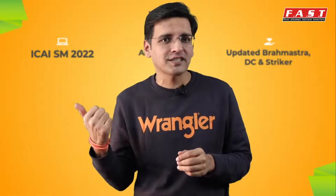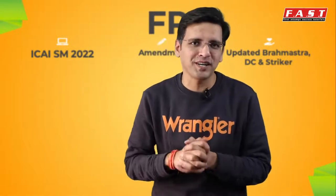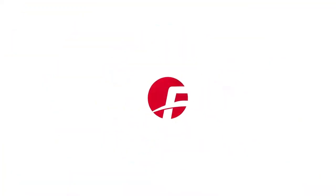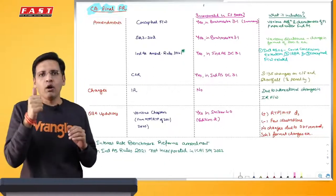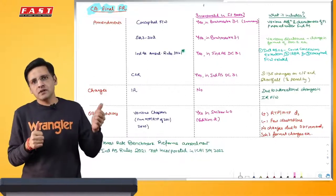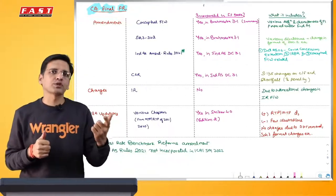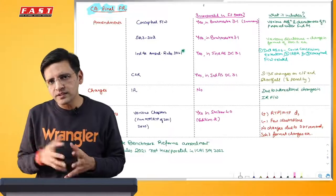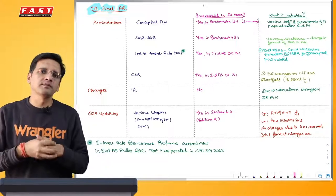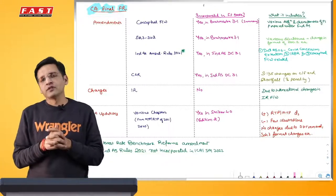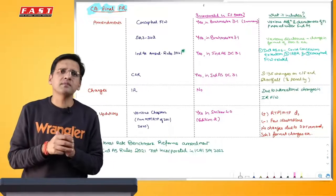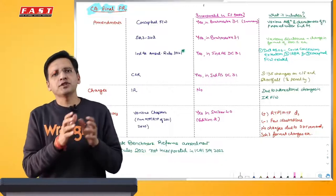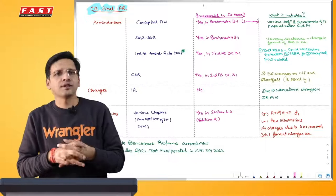I'll make a separate video for audit and intermediate advance accounts and audit - the subjects which I teach. Primarily, if we talk about these amendments, more or less you can see that these amendments are a consequence of amendments made in the law. In case of Financial Reporting, it is the Companies Act 2013 along with Ind AS Amendment Rules 2021, plus some new publications of the CA Institute - specifically the conceptual reporting framework on financial reporting for entities preparing financial statements using Ind AS.